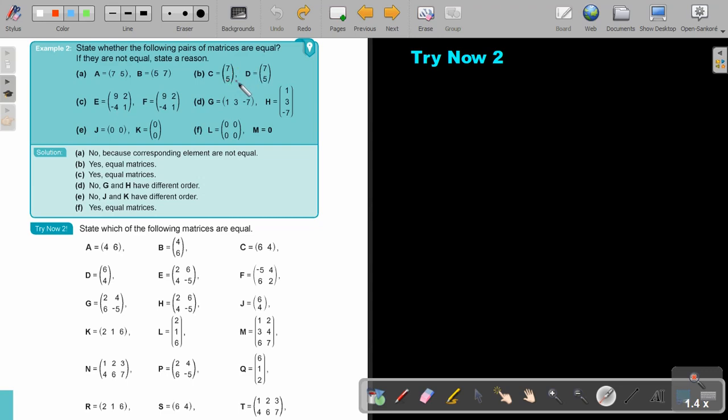Look at this one. Oh, exactly the same. It's almost like it will fit exactly on that one. So, it's equal matrices. The same here. Two by two. But look at the elements. Exactly the same. So, it's also equal.